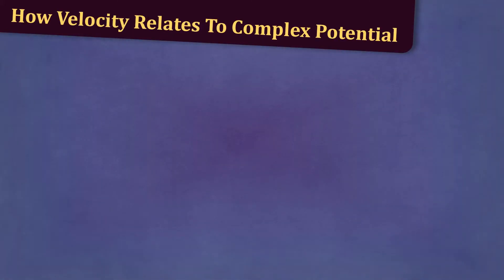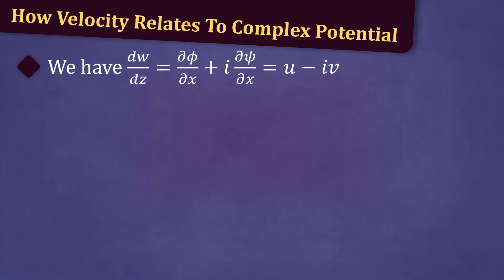Now, let's discuss how velocity relates to complex potentials. We have seen that dw/dz = ∂φ/∂x + i∂ψ/∂x = u - iv.